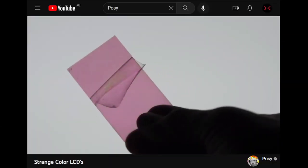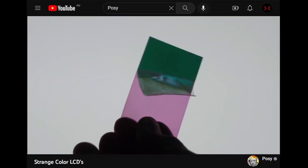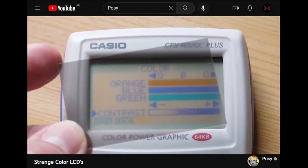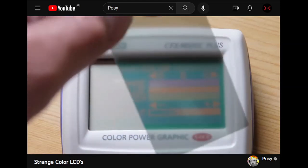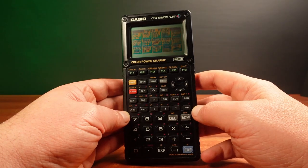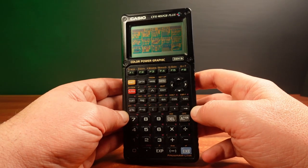But how did they do this, and how does this work? I've been wondering about this since I first saw Posey's intriguing video on strange colour LCDs. And then I was given this calculator, and now I can do some experiments.